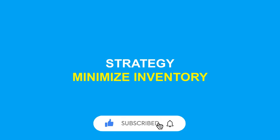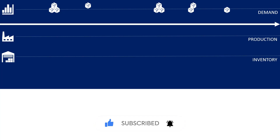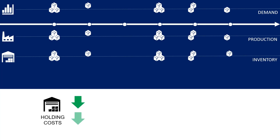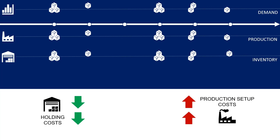Strategy one: you want to minimize the inventory. In this example, you have the actual demand per period, represented by the number of cases. For this first strategy, you want to store only the quantity that is ordered during the period. Basically, the production quantity is equal to the demand, and the inventory built during the month is totally consumed. So your holding costs are minimum, but you need to set up your lines five times, so your setup costs are exploding.